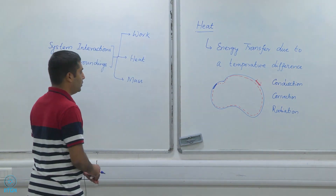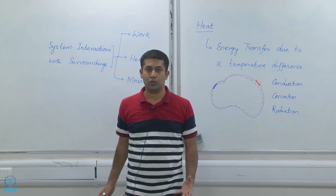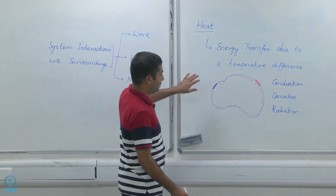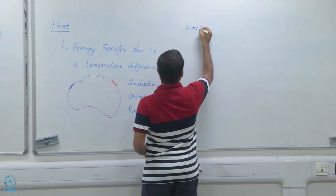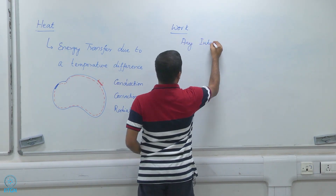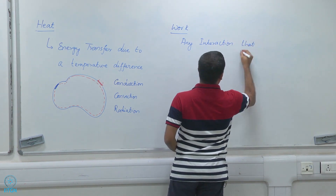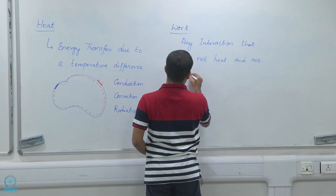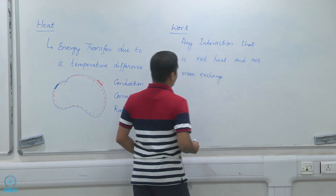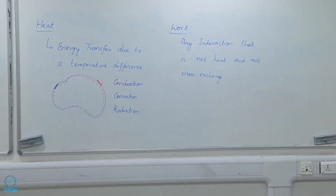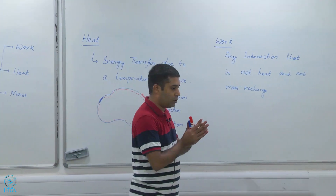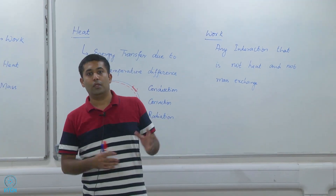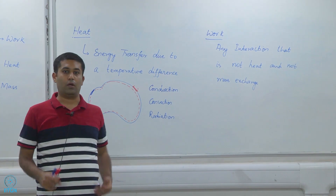We will not talk too much in detail about conduction, convection, and radiation because there is another course altogether dedicated to the mechanisms and analysis of those modes. Work is any interaction that is not heat and not mass exchange. It is a negative definition because it is very difficult to define it properly. If an interaction is because of a temperature difference, it is heat. If it is because of mass exchange, it is mass exchange. If it is neither of these two, then it is work, and there can be multiple forms of work.